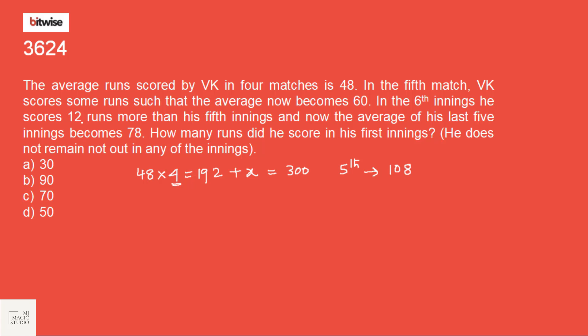In the 6th innings, he scored 12 runs more than the 5th innings. So 6th innings is 108 plus 12 is 120. And now the average of his last 5 innings becomes 78. Last 5 innings means 2nd, 3rd, 4th, 5th and 6th. This has become 78. 78 into 5, 390. We know the score of 6th one. We know the score of 5th one. And we know the score of 1, 2, 3, 4 also. How many runs did he score in his first innings? Given that he does not remain not out in any of the innings.